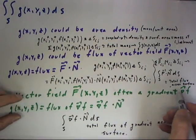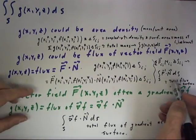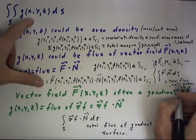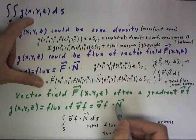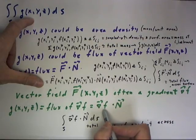The camera malfunctioned right at the end of the last clip, but all we said was that if g(x,y) is the gradient of some scalar function f,